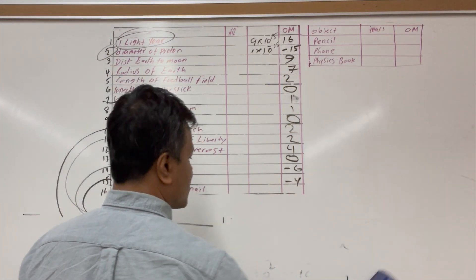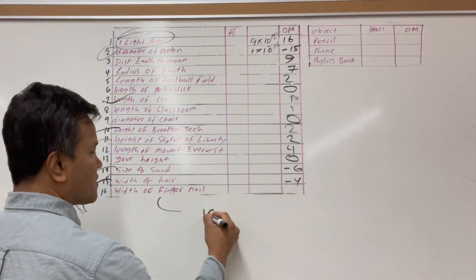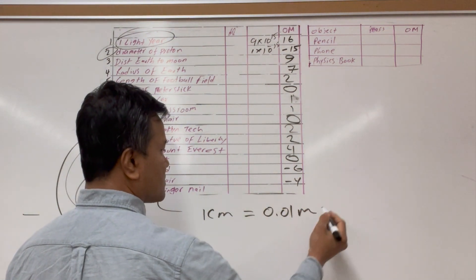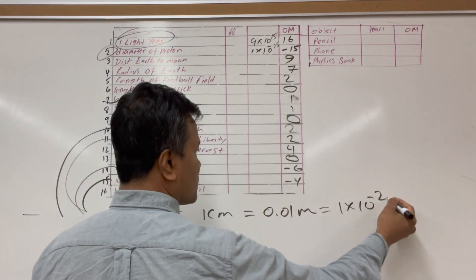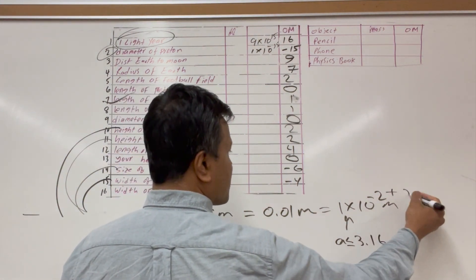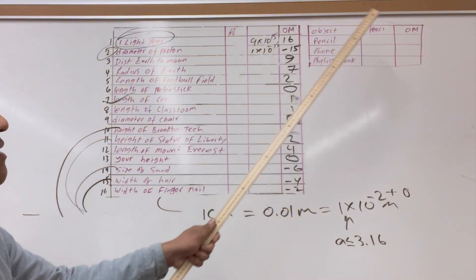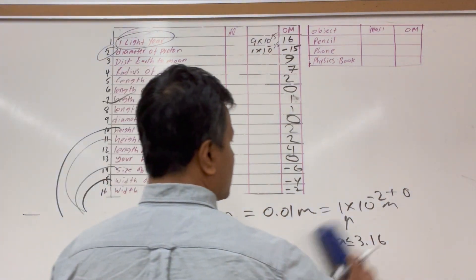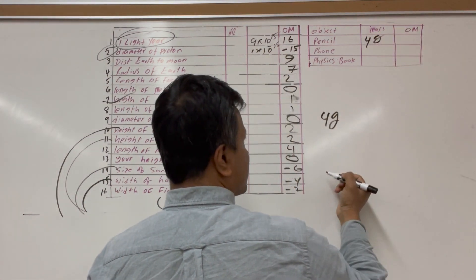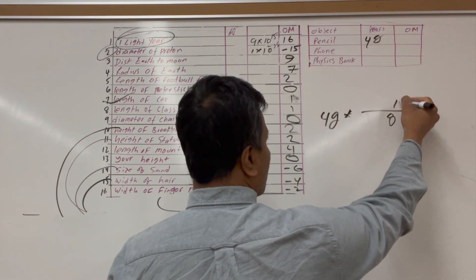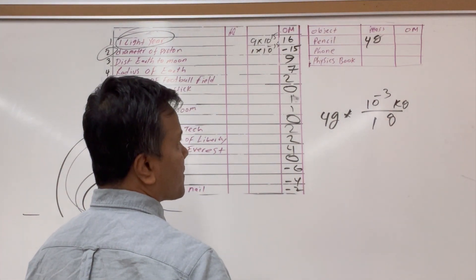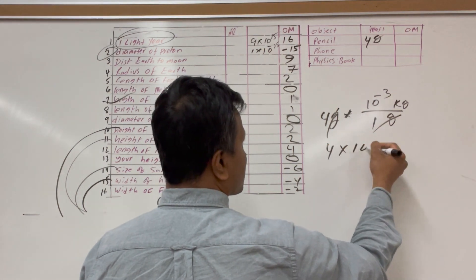The width of a finger is about 1 centimeter, which is 0.01 meters, or 1×10⁻² meters. Since 1 is less than 3.16, the order of magnitude is negative 2. For a pencil with a mass of 4 grams: converting to kilograms gives 4×10⁻³ kg. Since A equals 4 is greater than 3.16, the order of magnitude is negative 3 plus 1, which equals negative 2.